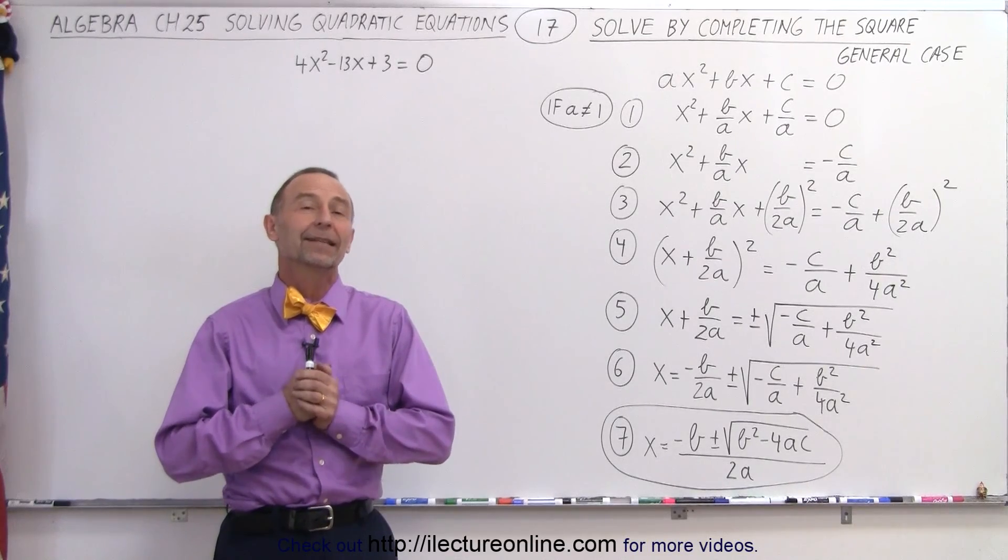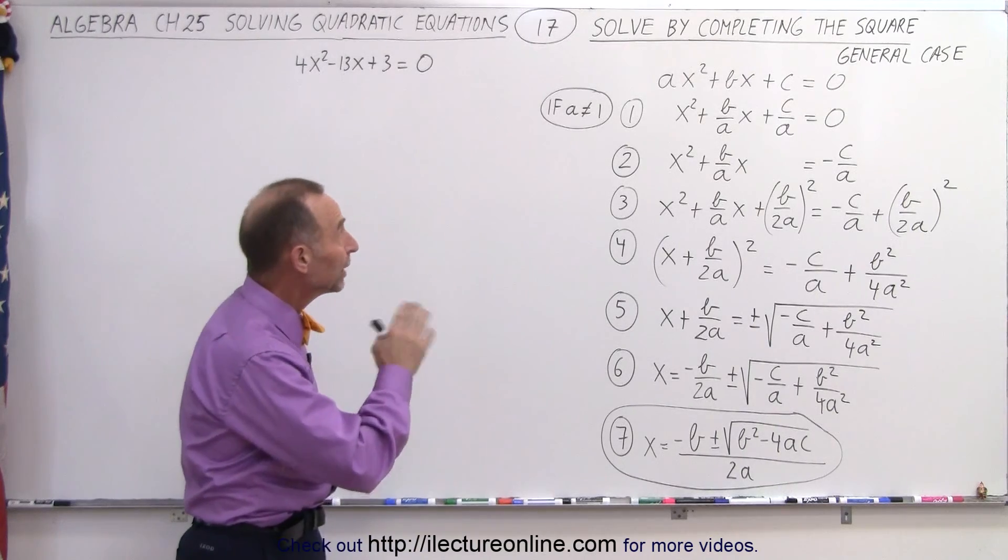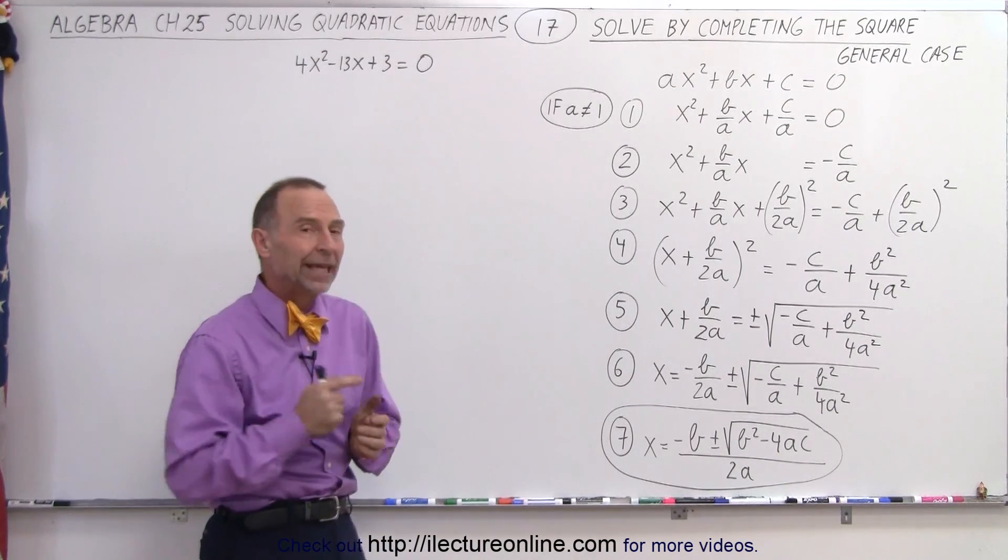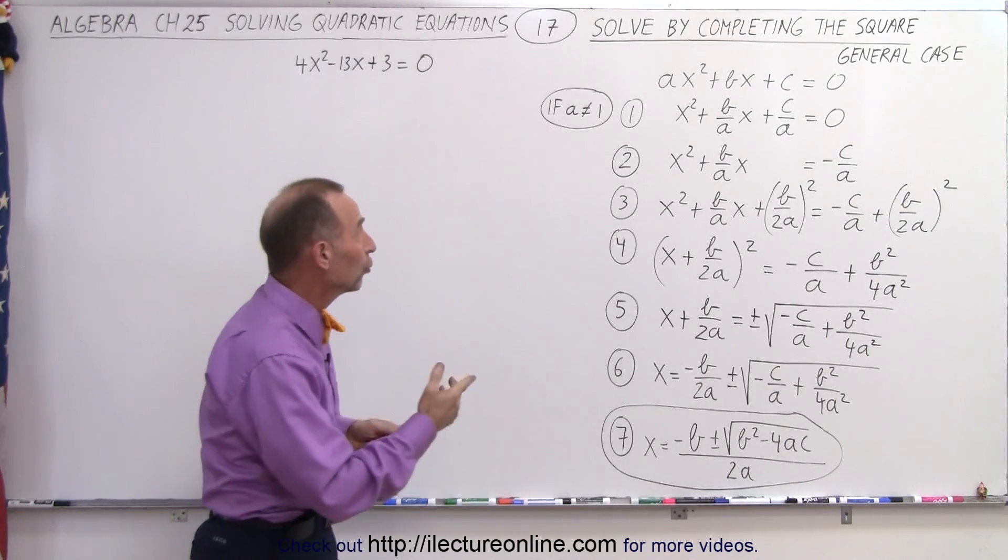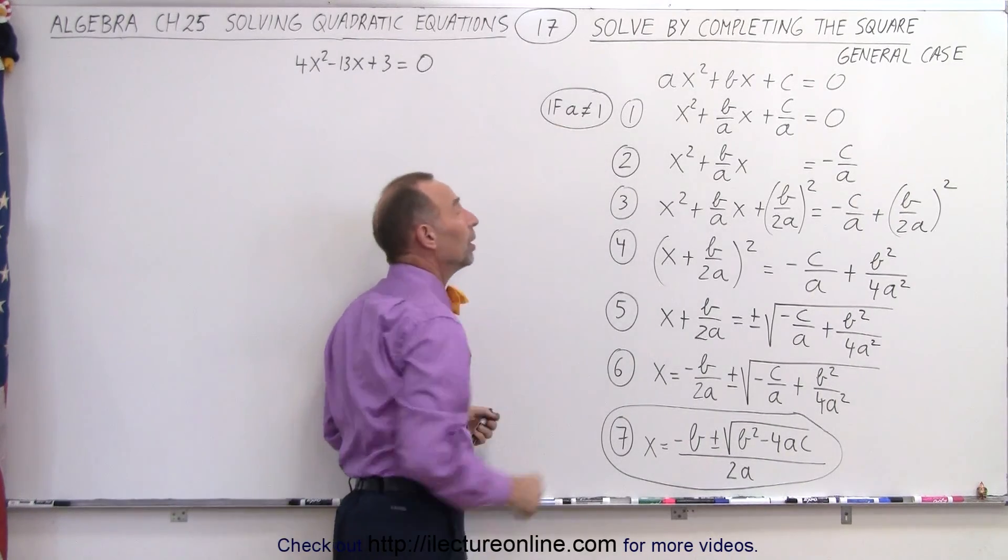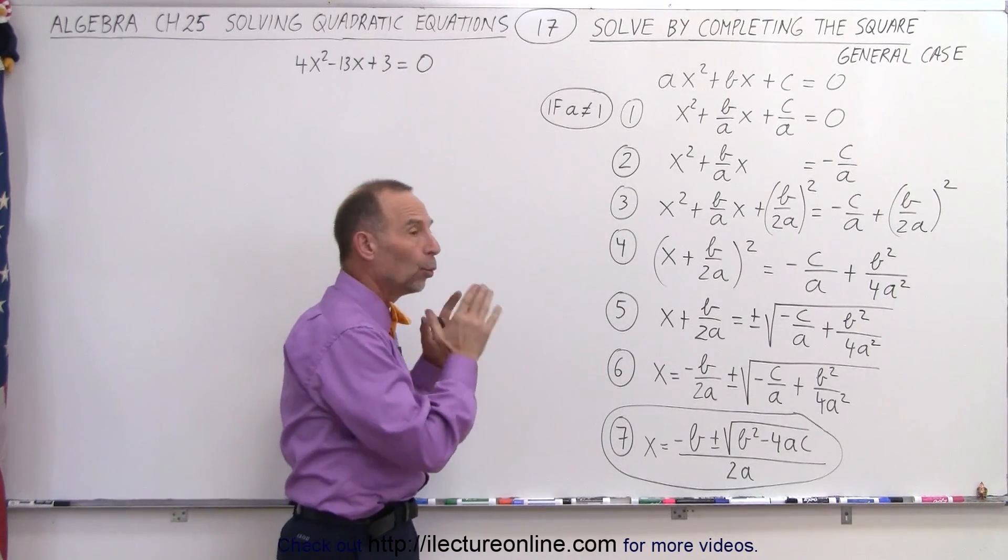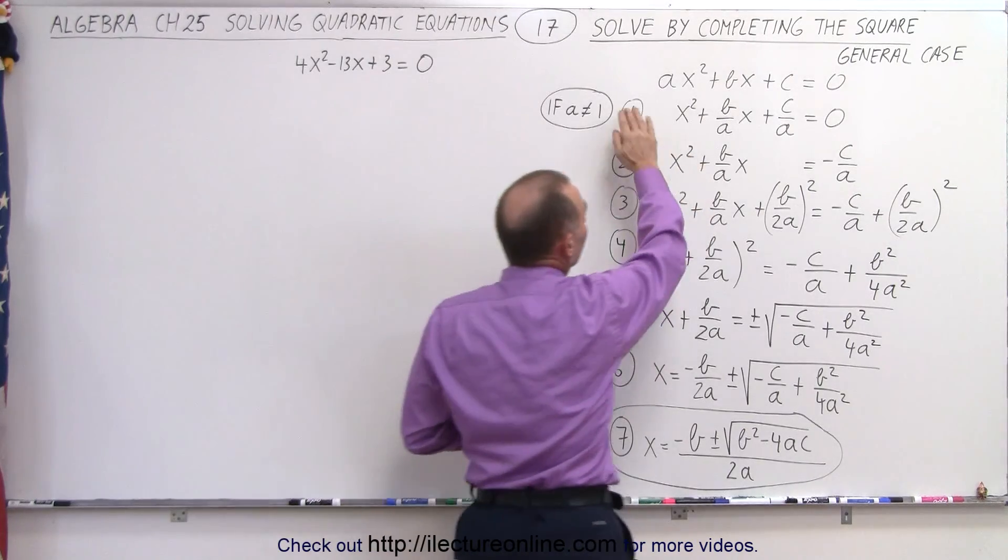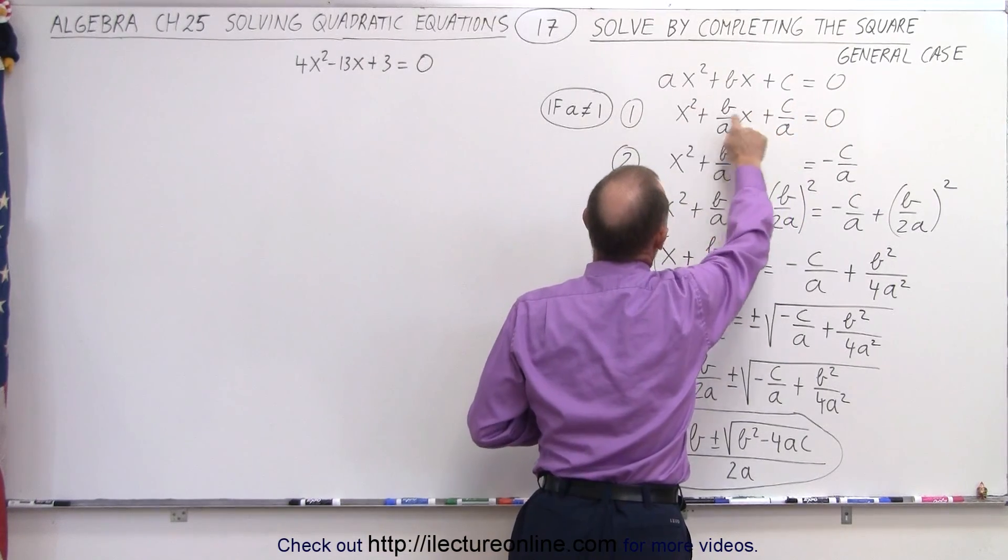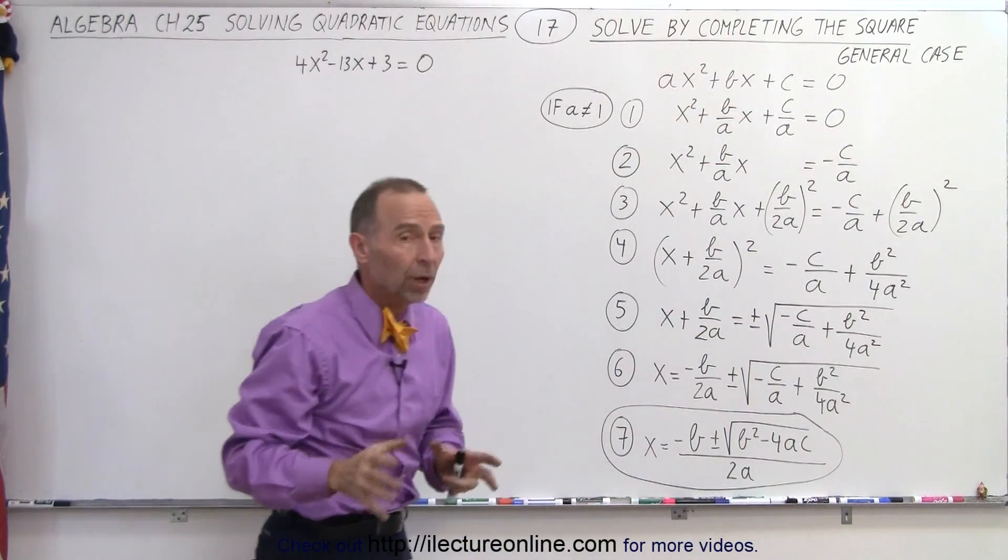Welcome to our lecture online. Now let's take a look at the general case of using the completing the square method to solve a quadratic equation. What that means is we're no longer going to assume that a is equal to 1. And if a is not equal to 1, we need to add one additional step. So let's say we have a general quadratic equation: ax² + bx + c, where a is not necessarily 1.